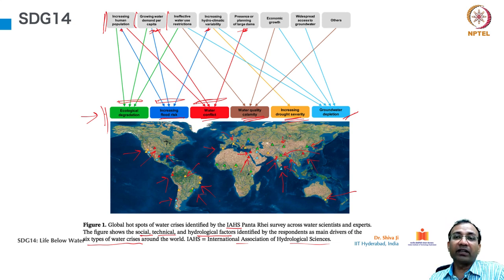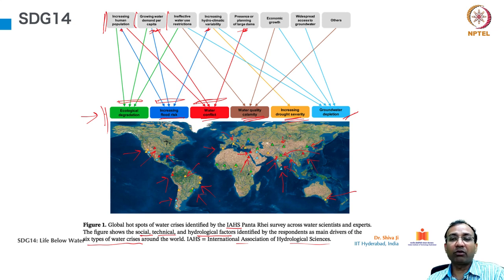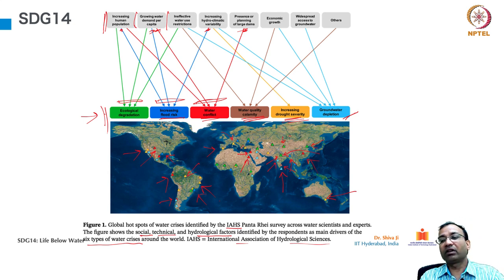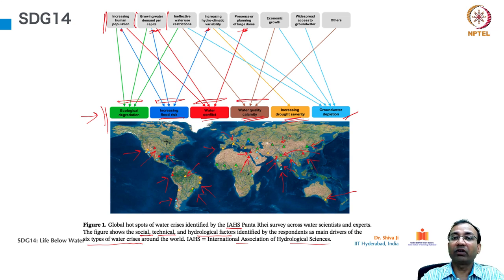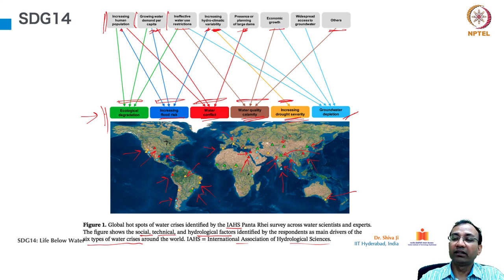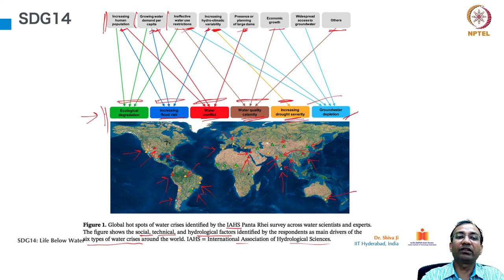Slowly it starts killing the river itself. That is one of the worst forms of power generation — sometimes it is referred to as a good solution, but if you study the after-effects of hydroelectric power plants, they have huge consequences on environmental aspects. Water dams must be discouraged. For drought severity, it is increased hydro-climatic variability directly related to that. For groundwater depletion — ineffective water use restrictions, increasing human population, increased hydro-climatic variability, economic growth, and widespread access to groundwater.